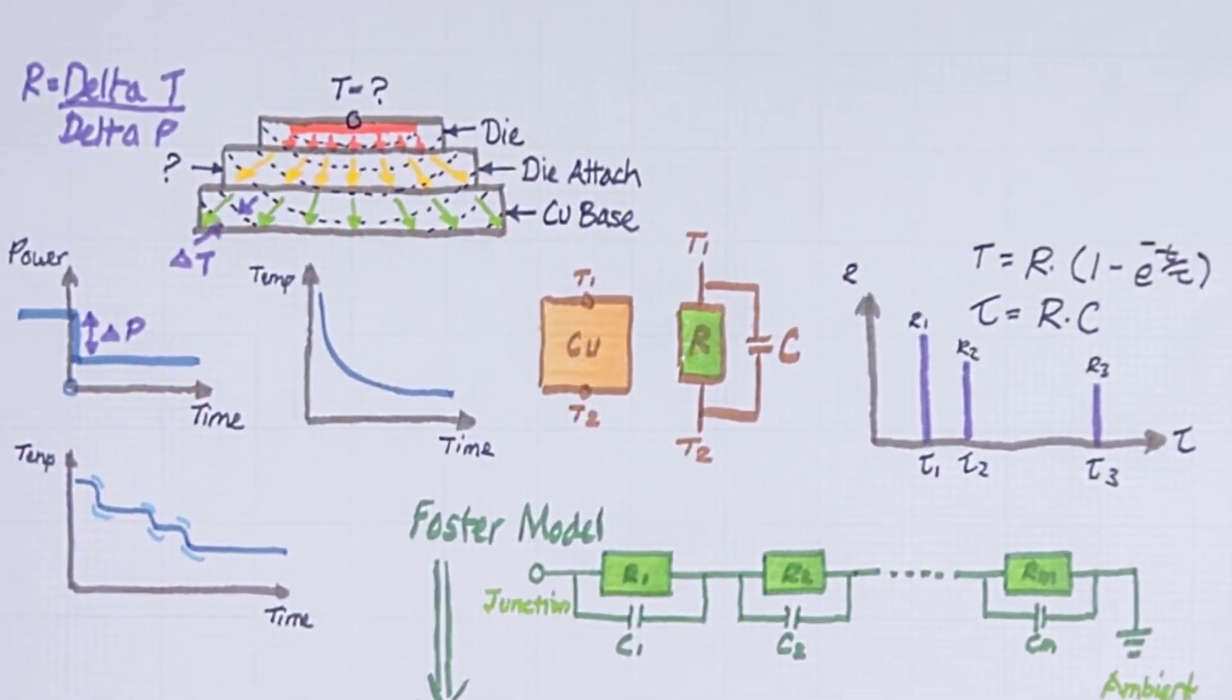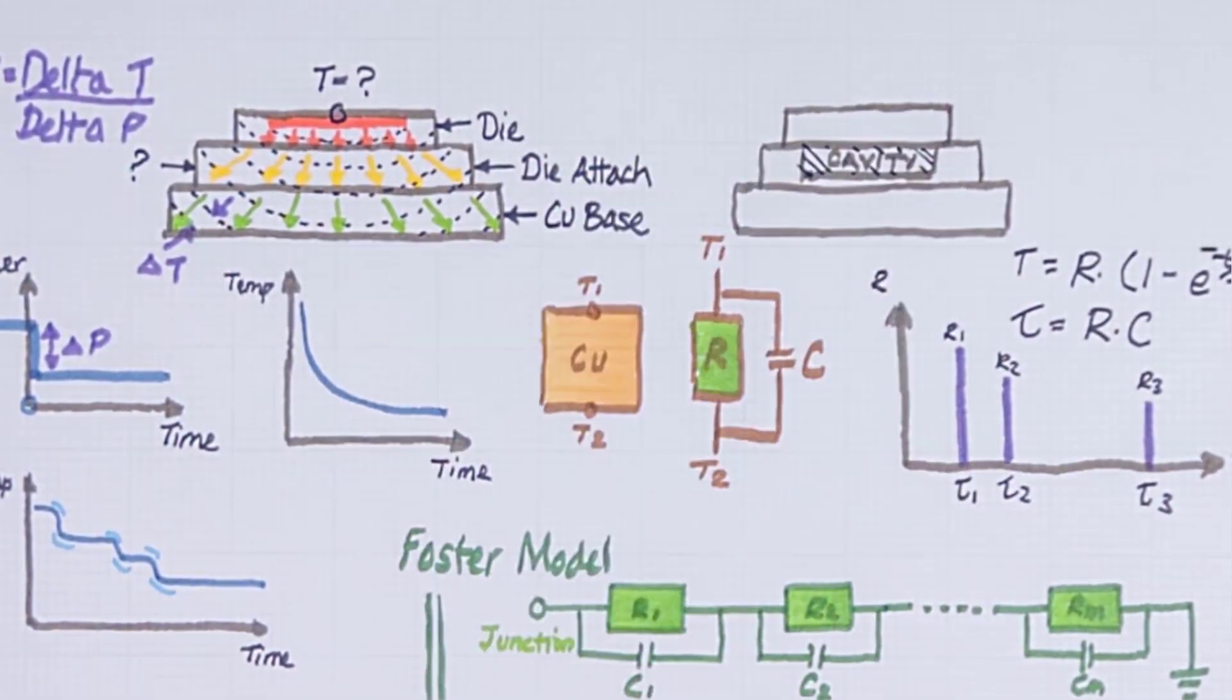For example if we had a package with a cavity the thermal resistance will be larger so the corresponding r's will increase and we will see the changes in the structure function.